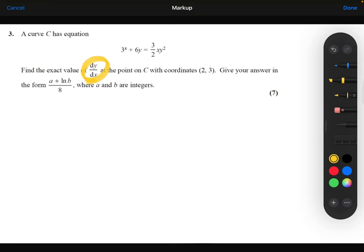So we need to differentiate. Now, I can see at the moment that I can't rearrange this to make either y or x the subject. This is all a bit awkward, so I'm going to have to use implicit differentiation. What that means is I'm going to differentiate everything on the left-hand side with respect to x, and then differentiate everything on the right-hand side with respect to x.